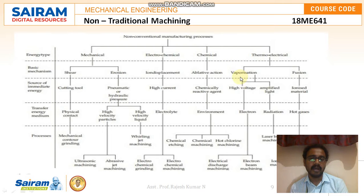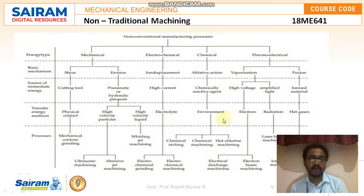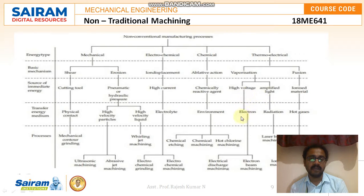Under thermoelectrical — specifically vaporization — we have high voltage and amplified light, and for fusion we have ionized material. Regarding the energy transfer medium: for cutting tools it is physical contact; for pneumatic or hydraulic processes it is high velocity particles or high velocity liquid; for high current processes the electrolyte is preferred; and for chemically reactive agents, the environment — atmospheric or laboratory conditions — is very important. For high voltage, electrons are used, and for amplified light, radiations are used. For ionized material, only hot gases are preferred.